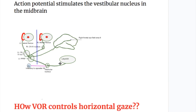How does VOR control horizontal gaze? For horizontal gaze, the information goes to the vestibular nucleus and then to the parapontine reticular formation — the center for horizontal control — then to the nucleus of the sixth nerve, the abducens nerve ipsilaterally to contract the lateral rectus, and via the medial longitudinal fasciculus to the opposite oculomotor nucleus to adduct the medial rectus muscle.